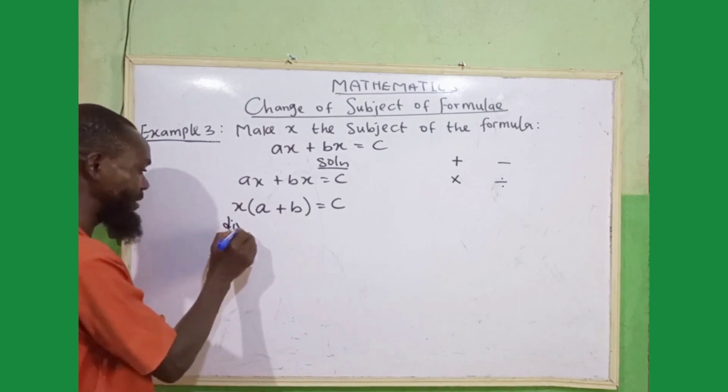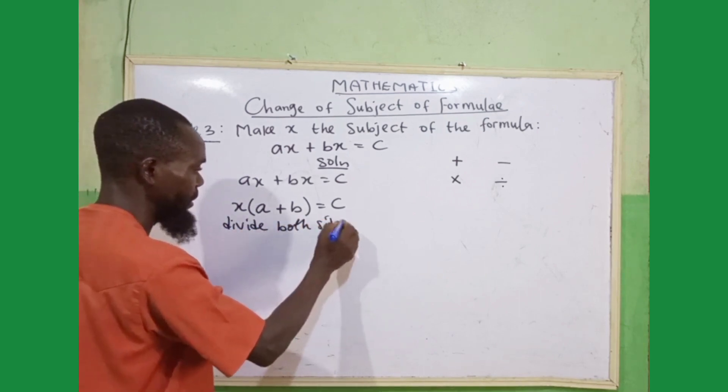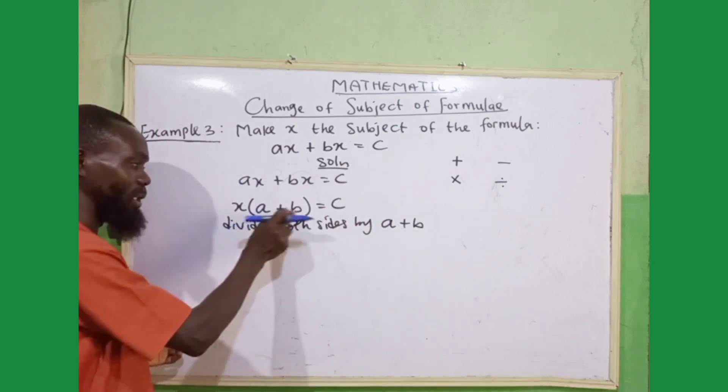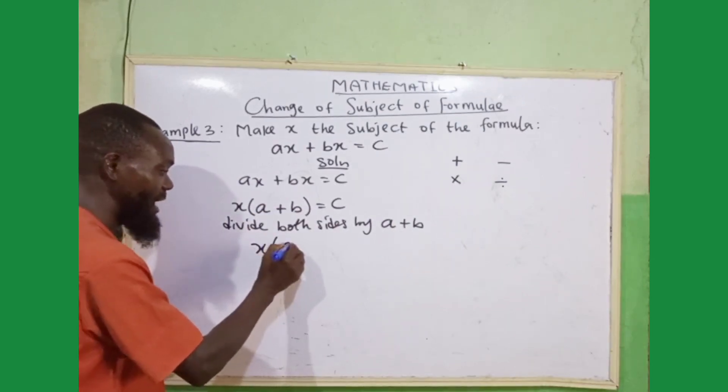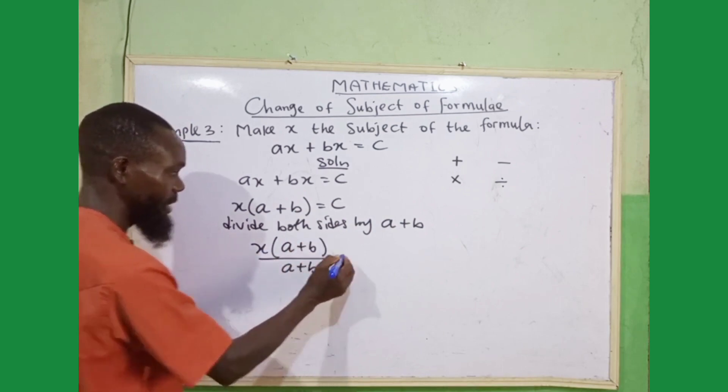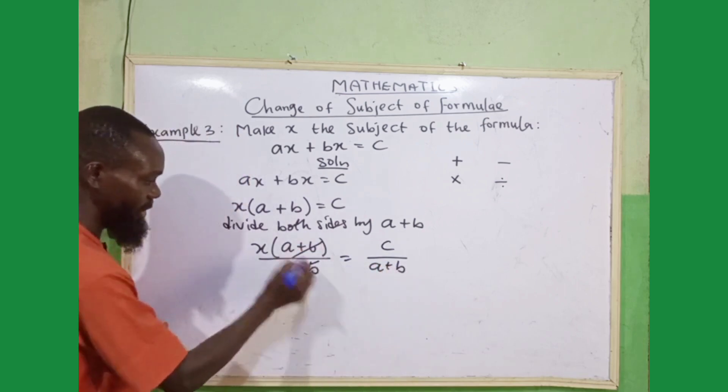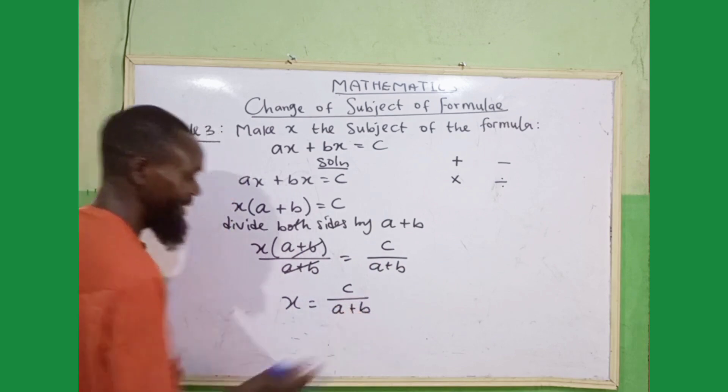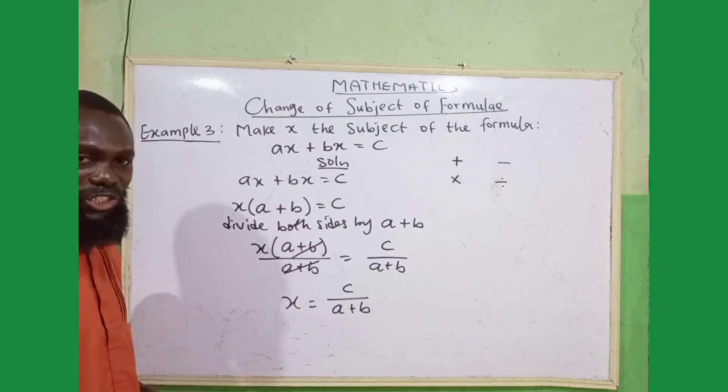By saying, divide both sides by (a + b). That is, to remove this (a + b), I have to find the opposite of this multiplication. By saying, x(a + b) ÷ (a + b) = c ÷ (a + b). This cancels this. x = c/(a + b). So, we have made x the subject of this equation, of this formula.